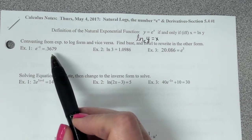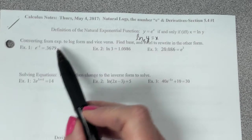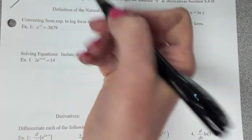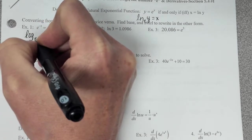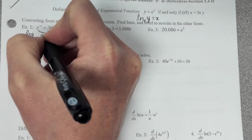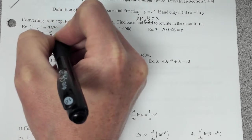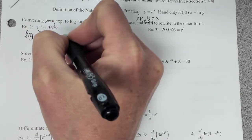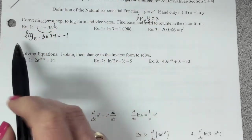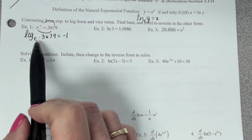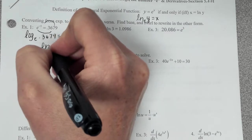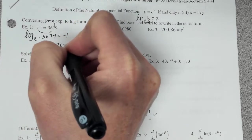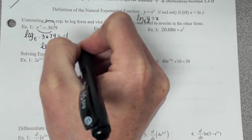We're just converting back and forth between exponential and log form. So on example one, if I want to rewrite this as a log, I could even think of it as log, regular log, base e. Swirl it around, 0.3679 equals negative one. But what's another name for log base e? Just natural log. So natural log of 0.3679 equals negative one.